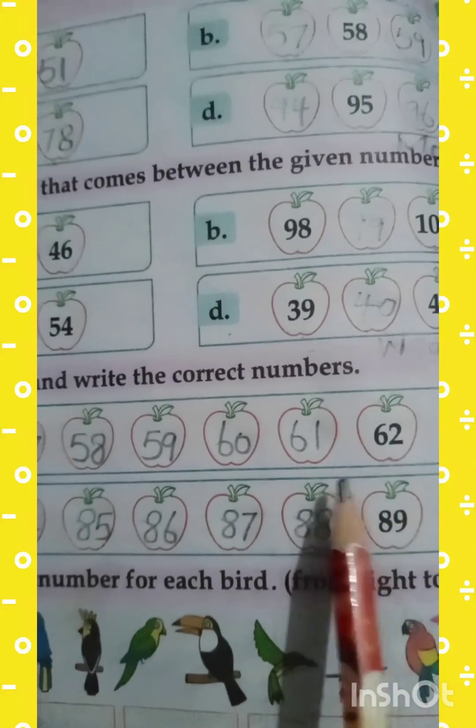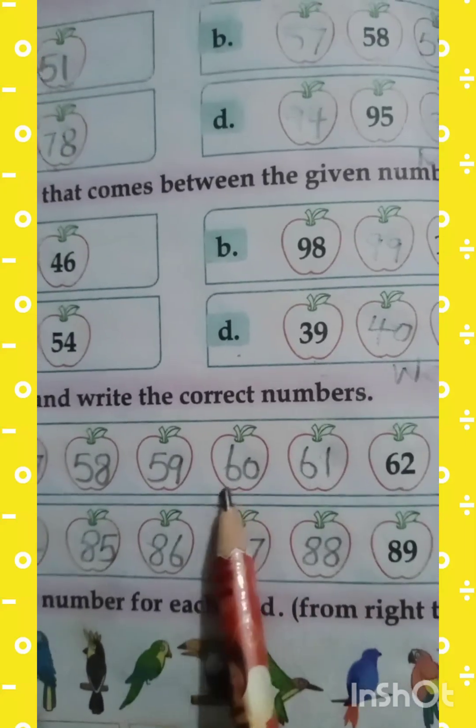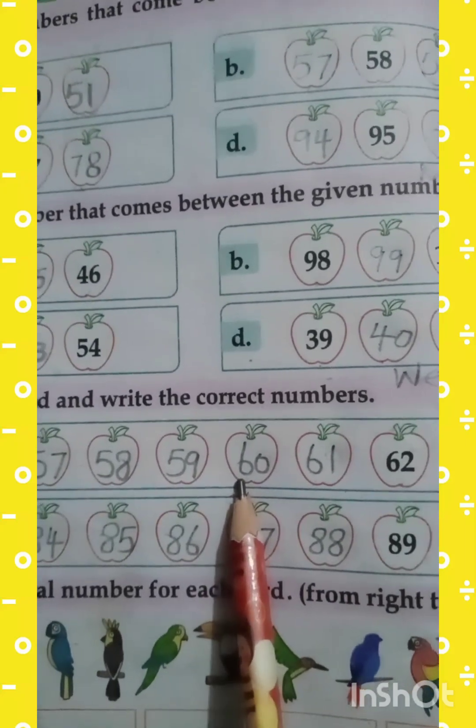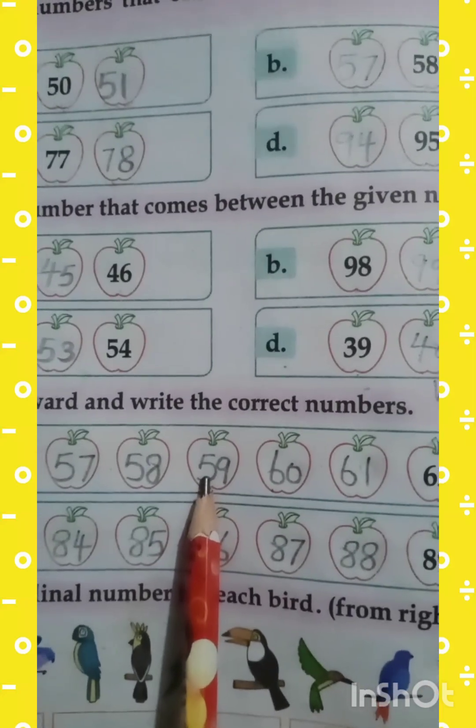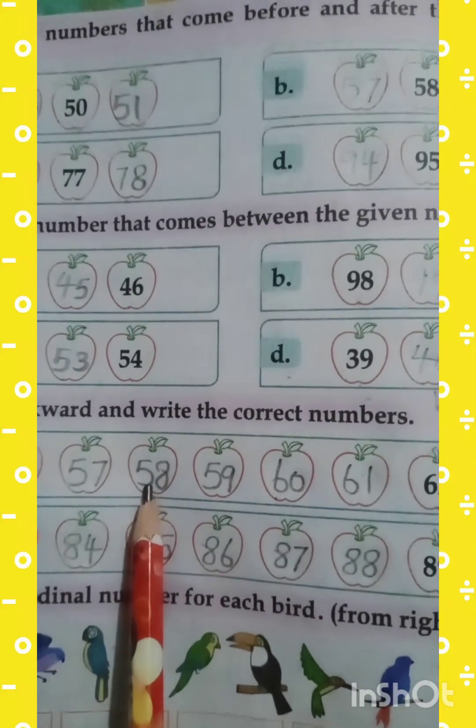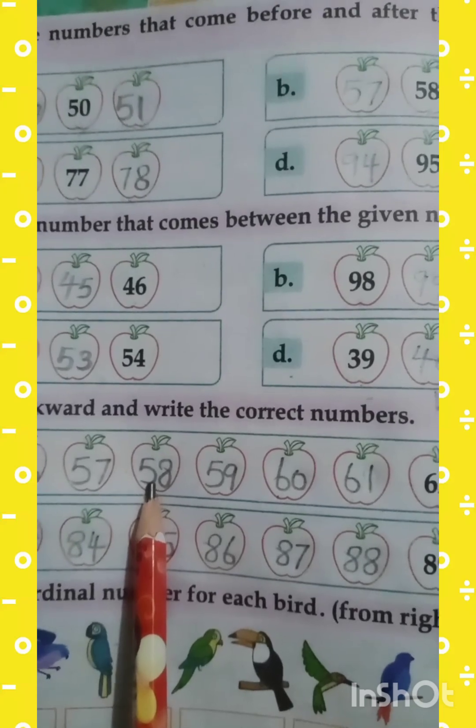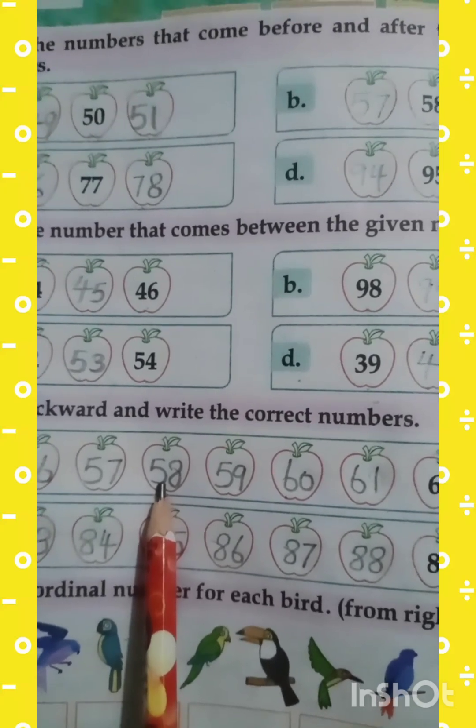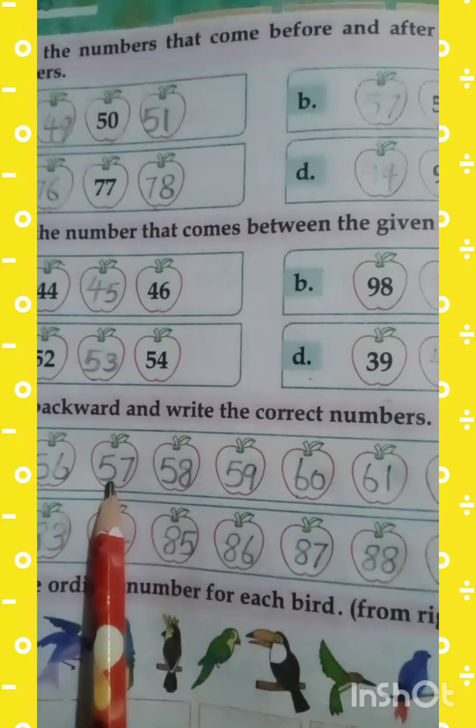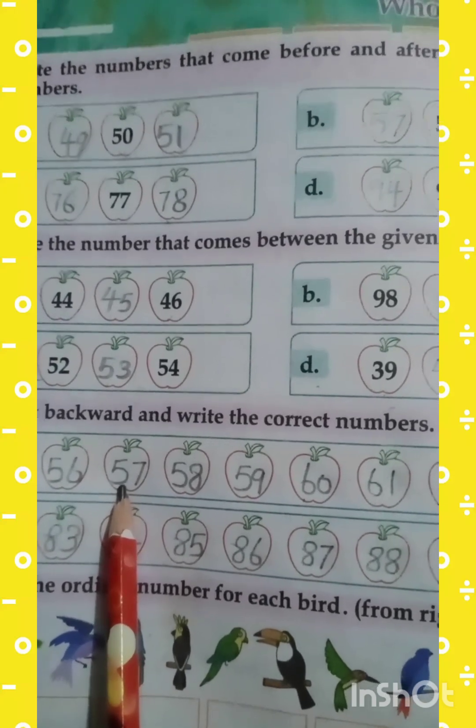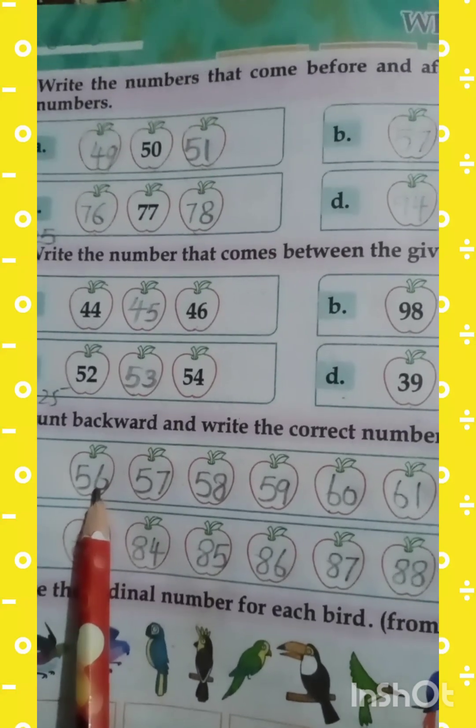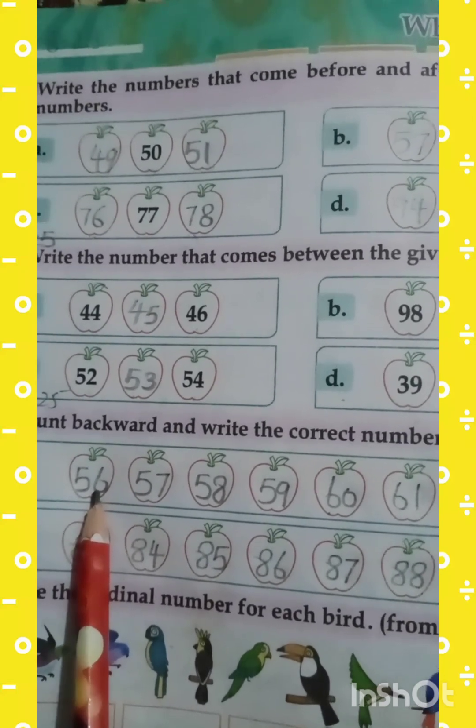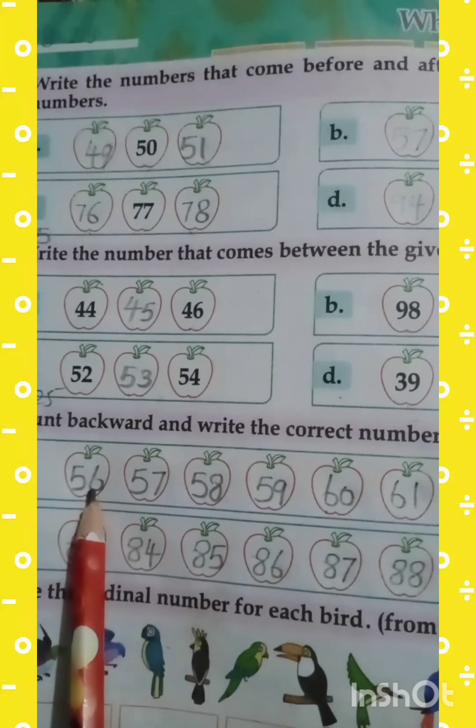Comes before 61 is 60. Comes before number 60 is number 59. Comes before number 59 is number 58. Comes before number 58 is number 57. And comes before number 57 is number 56.